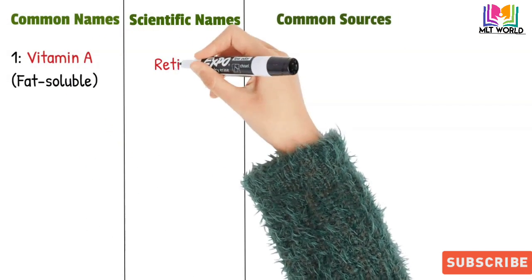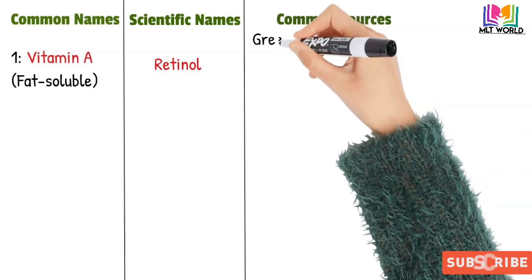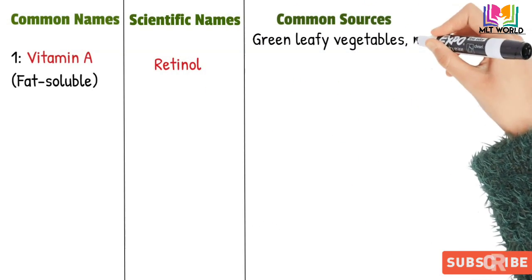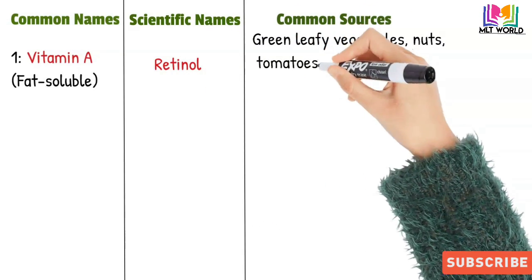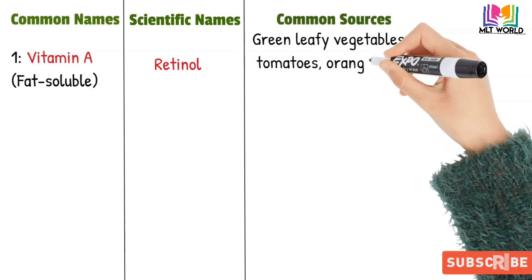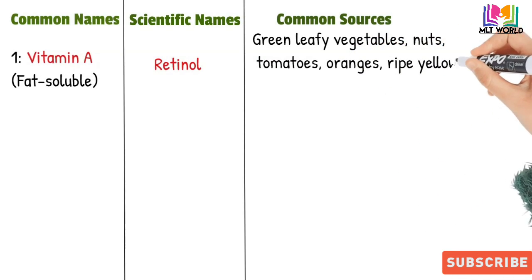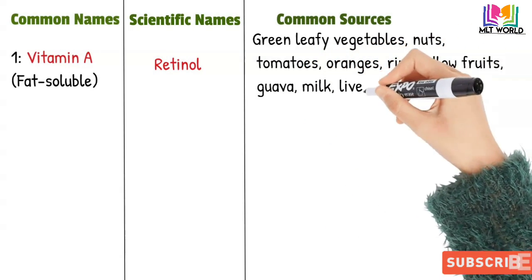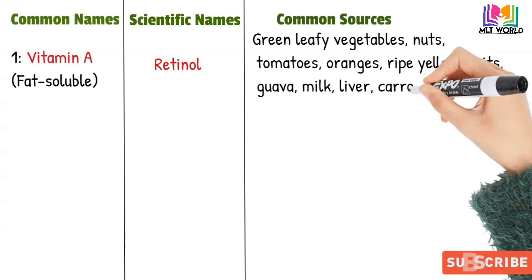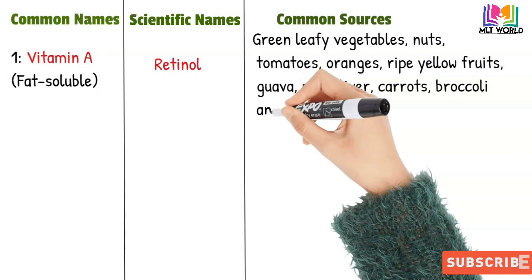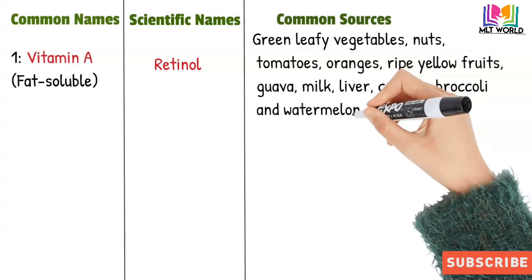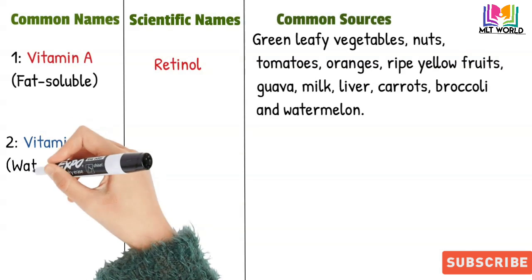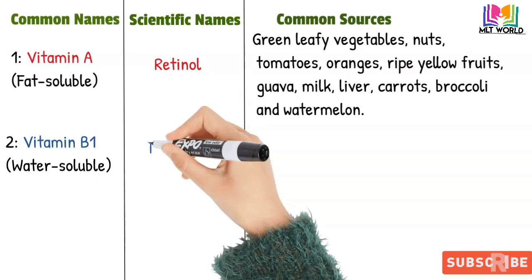First is Vitamin A, which is fat-soluble. Its scientific name is retinol. Common sources include green leafy vegetables, nuts, tomatoes, oranges, ripe yellow fruits, guava, milk, liver, carrots, broccoli, and watermelon.